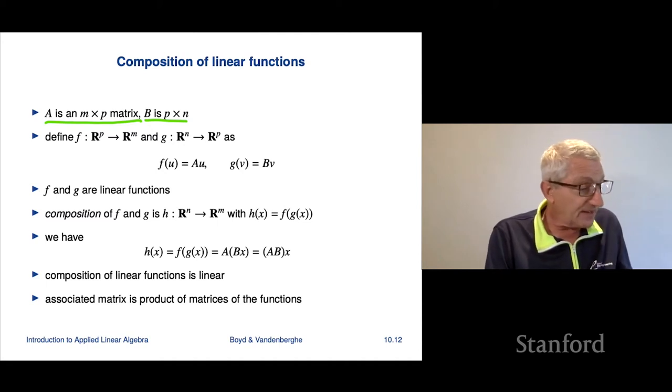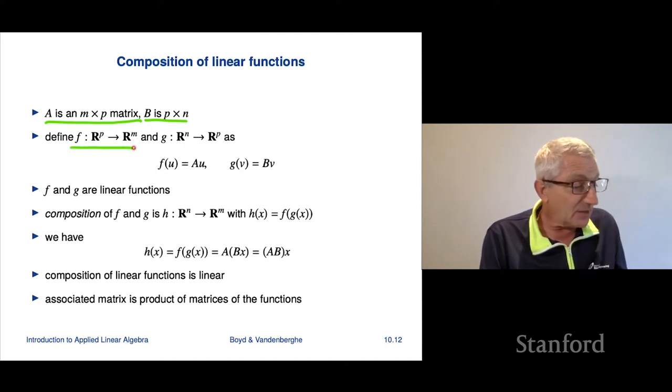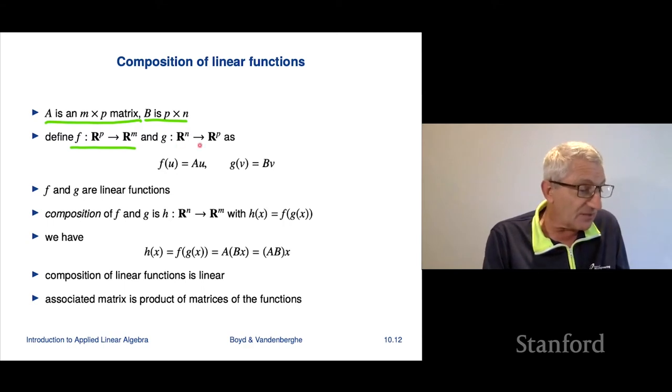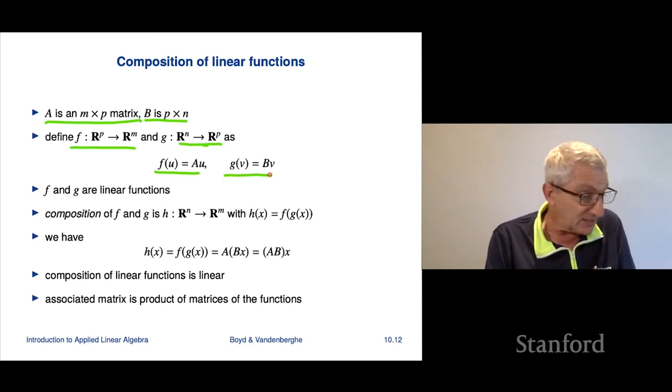So let's define a function f and it's going to map Rp to Rm, and that means that f takes in a p-vector and returns an m-vector. g is going to be a function that takes in an n-vector and then spits out a p-vector. And these are going to be defined by matrix multiplication by A and B respectively.